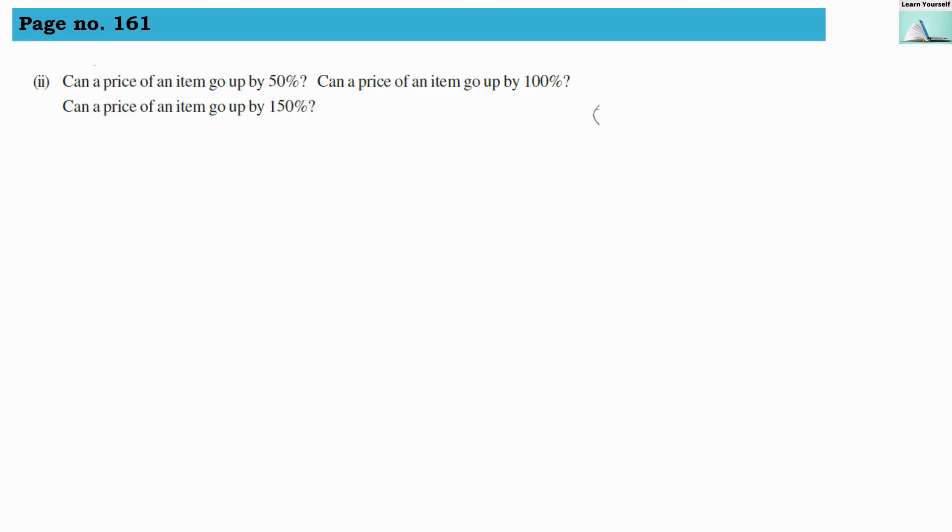Our second question. So here also we are denoting question A, question B, and question C. Can a price of an item go up by 50%? Now let us assume that price of one pen is rupees 2. I am taking very small quantity so it will be easy for comparison. Now let us try to understand what will be the 50% hike for this price. So if 2 rupees is 100%, then what will be the 50%? So here we will get 2 into 50 divided by 100.